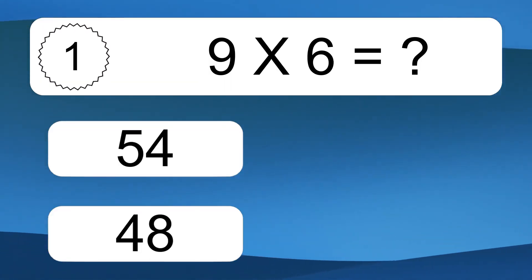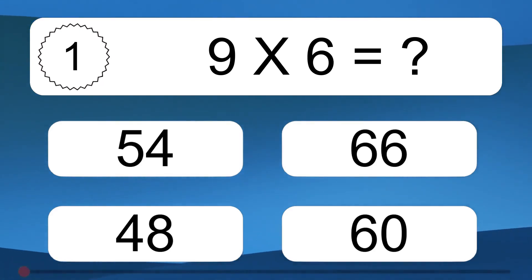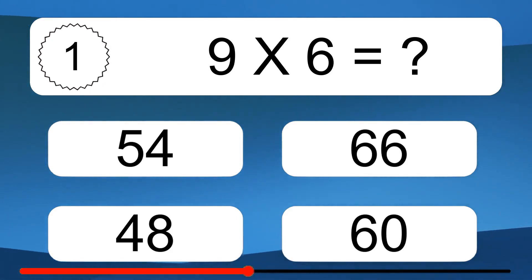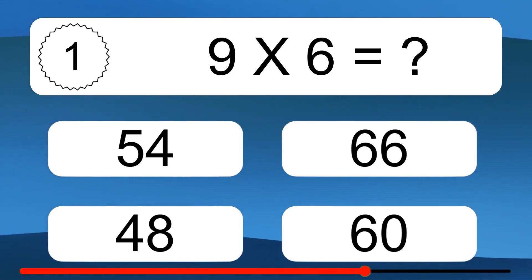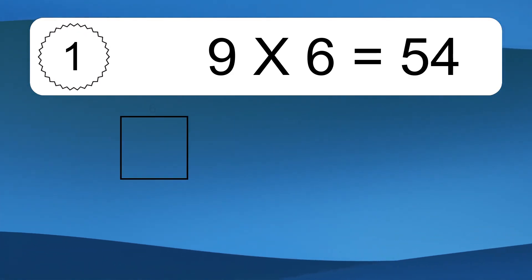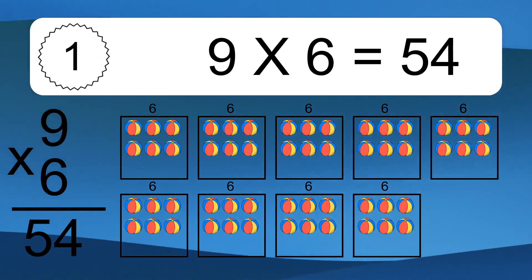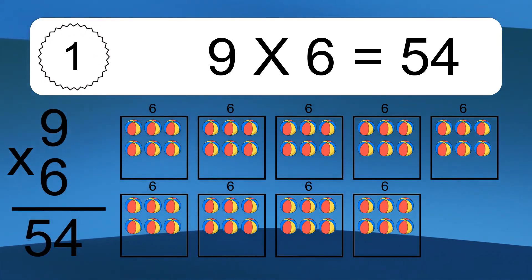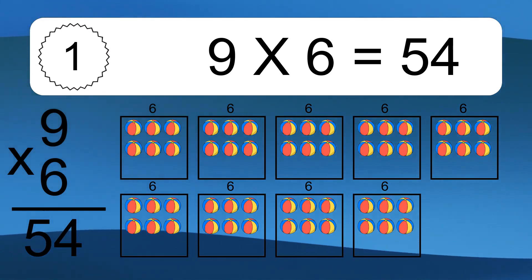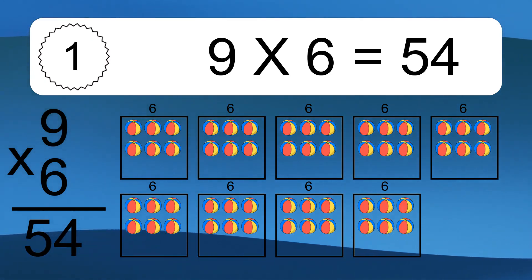Nine times six equals what? Nine times six equals 54. We have nine boxes, and each box has six colorful balls inside. If you count all the balls in all the boxes together, you will have nine times six balls. This equals 54 balls.